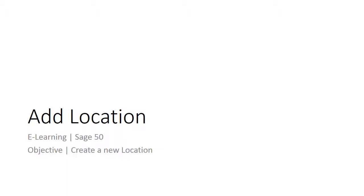Welcome to the e-learning for Sage 50 on the topic of adding a location. The objective of this feature is to guide you through the basic function of inventory location and setting it up properly. This topic covers how to maintain locations easily, especially if you have warehouses at different locations. Location is used to keep and track stock availability and reporting. Now let's create a new location.